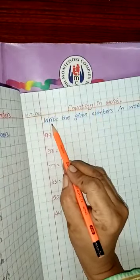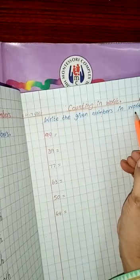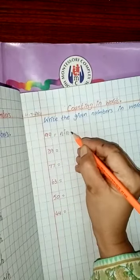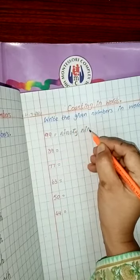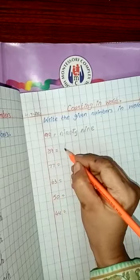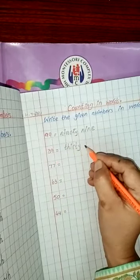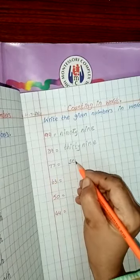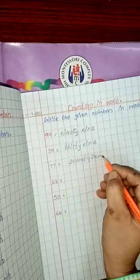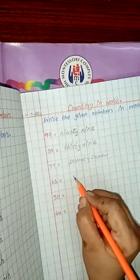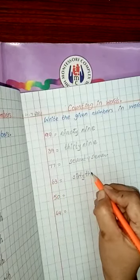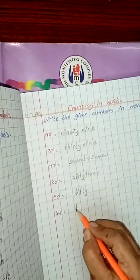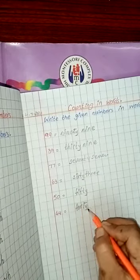Aur question hum likhenge: Write the given numbers in words. Aapne spelling likhni hai 99 ki. Yahan par aap spelling likhenge. 99. 39. 37. 77. 67. 63. 50. 44. 44.